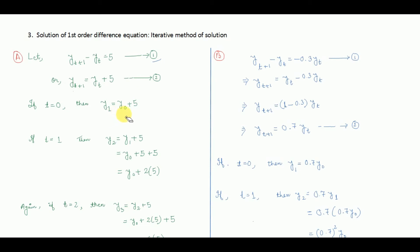If we put t equal to 1, then equation number 2 becomes y2 equals y1 plus 5. Since the value of y1 is already obtained as y0 plus 5, we substitute it in, giving y2 equals y0 plus 5.